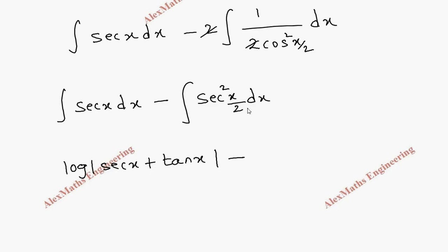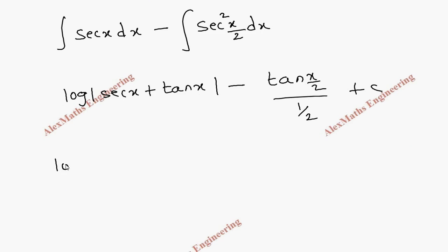The formula for secant square x is tan x by 2, by 1 by 2, divided by the coefficient of x. So this becomes log mod secant x plus tan x minus tan x by 2 times 2, which is minus tan x, plus c.